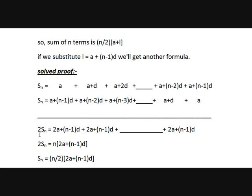Now if we add these two, then 2Sn: the first pair gives a plus a plus n minus 1 times d, which is 2a plus n minus 1 times d. Similarly, the next pair gives 2a plus n minus 1 times d, and so on. The last pair is also 2a plus n minus 1 times d. So 2Sn equals — how many 2a plus n minus 1 times d terms are present? 1, 2, and so on up to the nth term, meaning there are a total of n such terms. So 2Sn equals n into 2a plus n minus 1 times d. Now if 2 goes to the other side, it becomes Sn equals n by 2 into 2a plus n minus 1 times d.